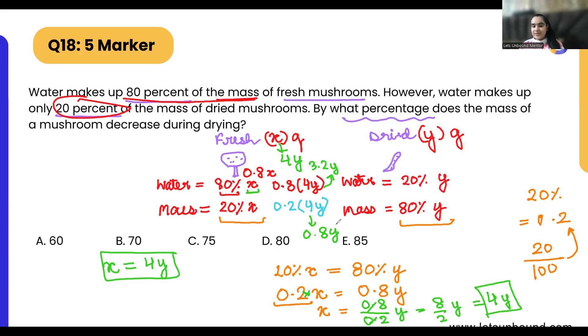So far I hope it is clear. Now we need to find out percent decrease during drying. So what is happening? The mass is decreasing, right? And how come mass is decreasing? Because of water. So we are only going to use this water content. You can see over here it is 3.2y and here it is going to be 0.2y.